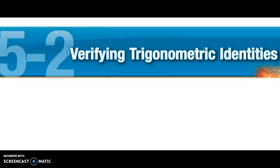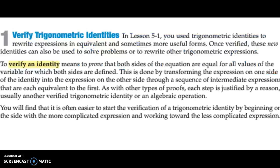Section 5.2 is on verifying trigonometric identities. We're going to take the information we learned in section 5.1 and now prove that both sides of an equation are equal. To verify an identity means to prove that both sides of the equation are equal for all variables.